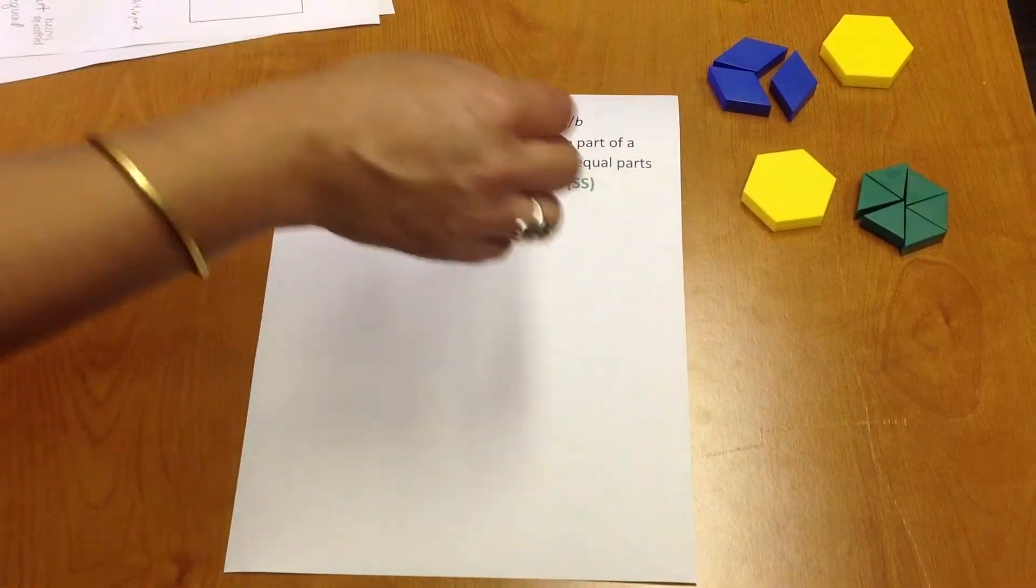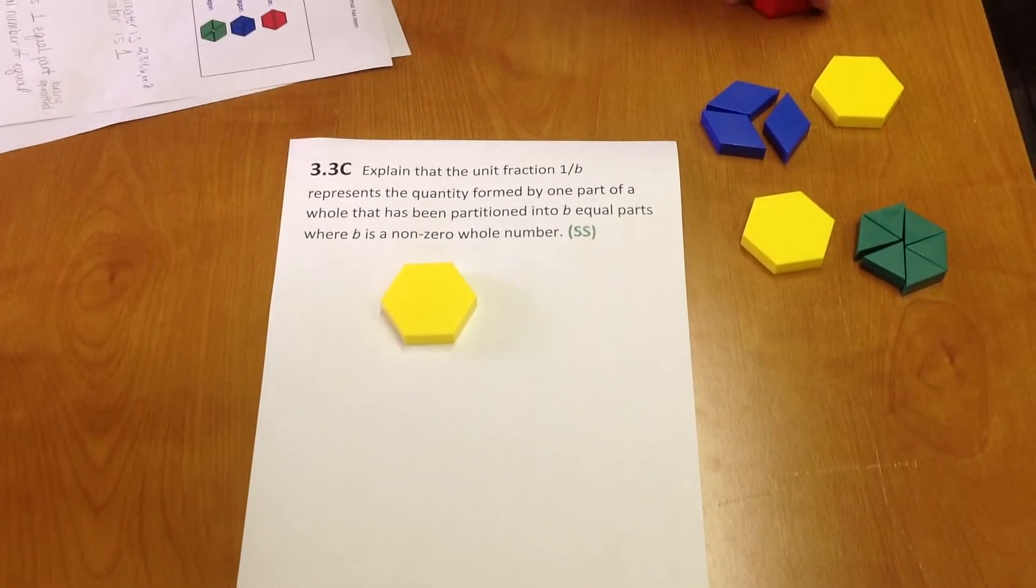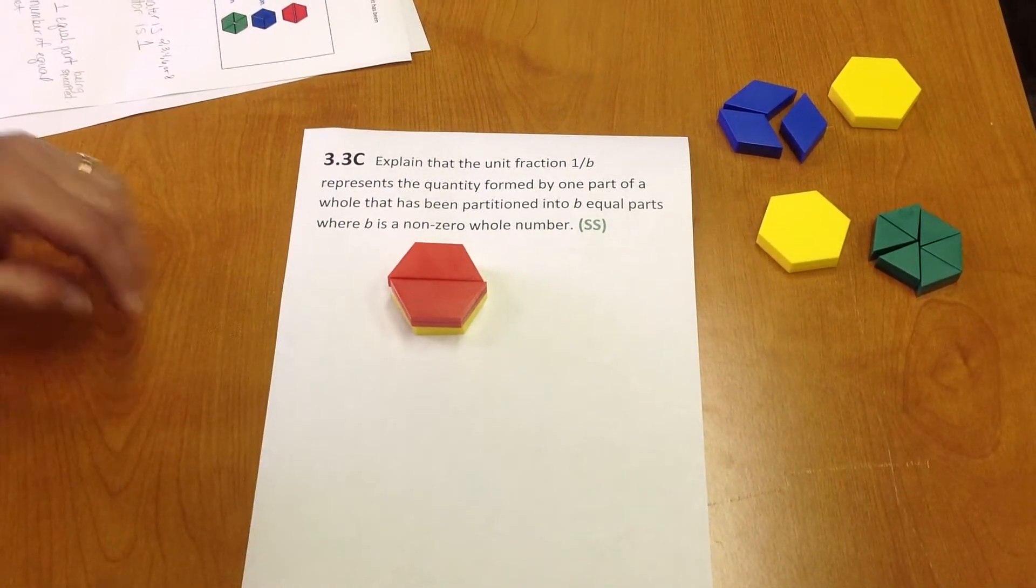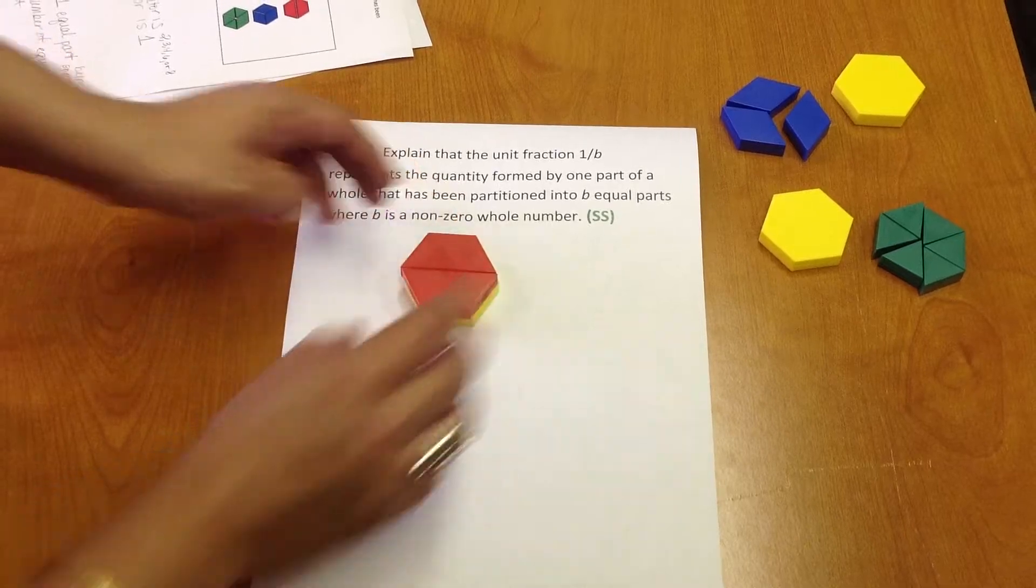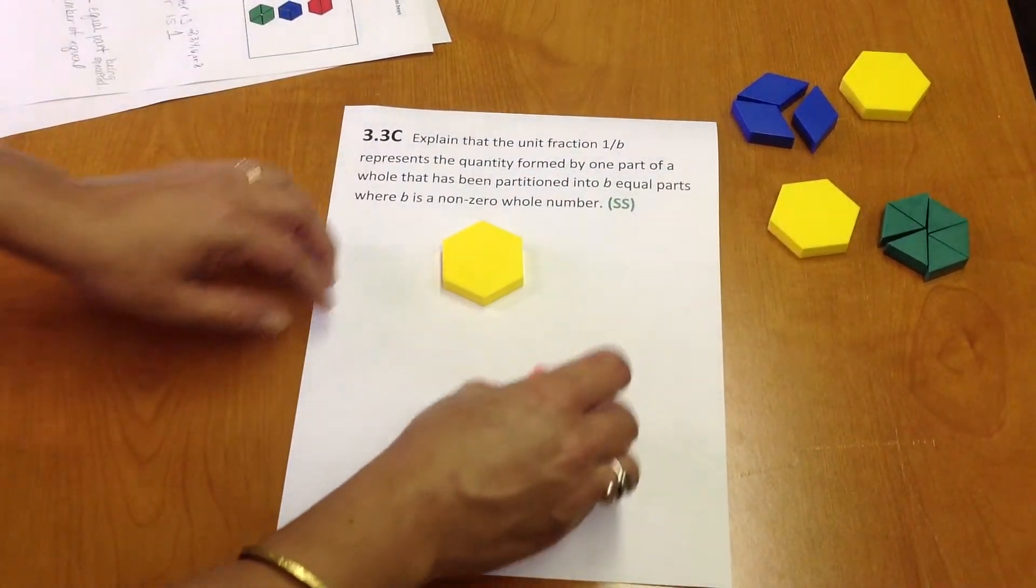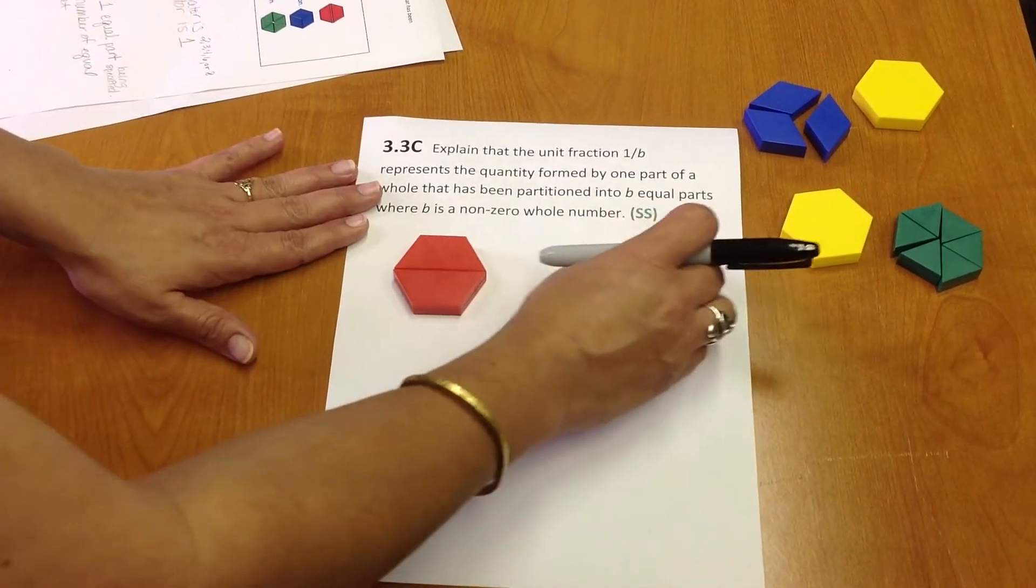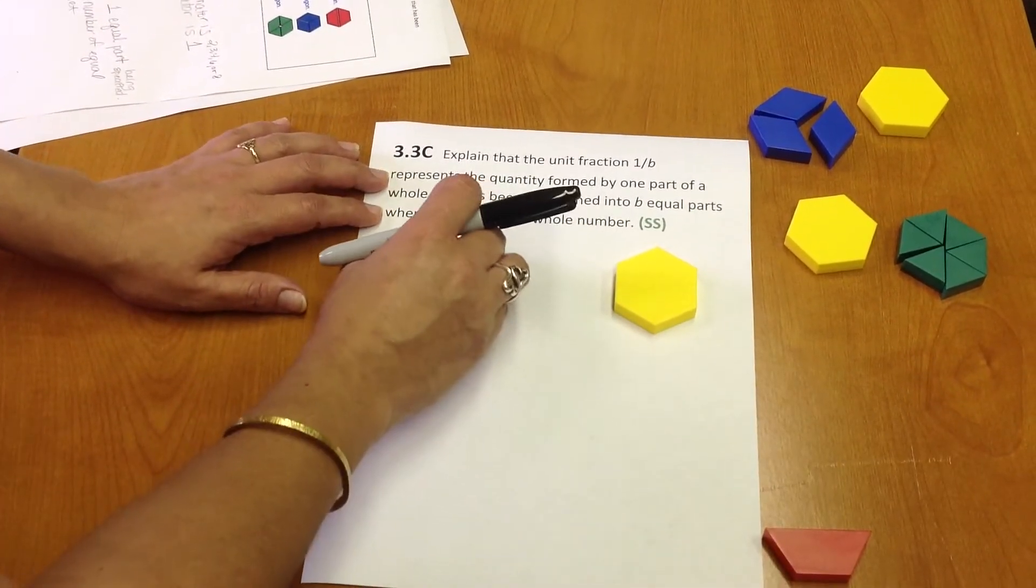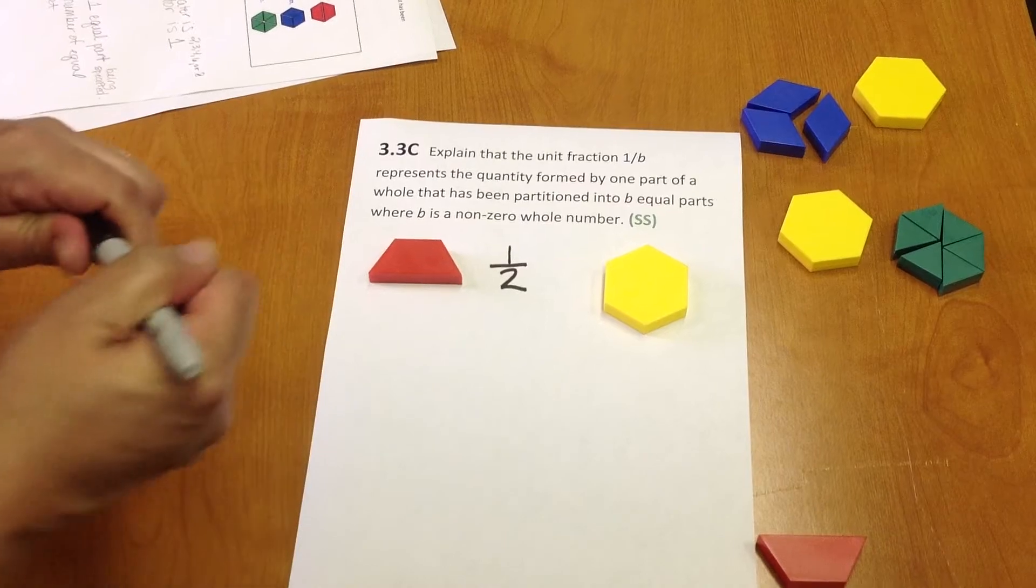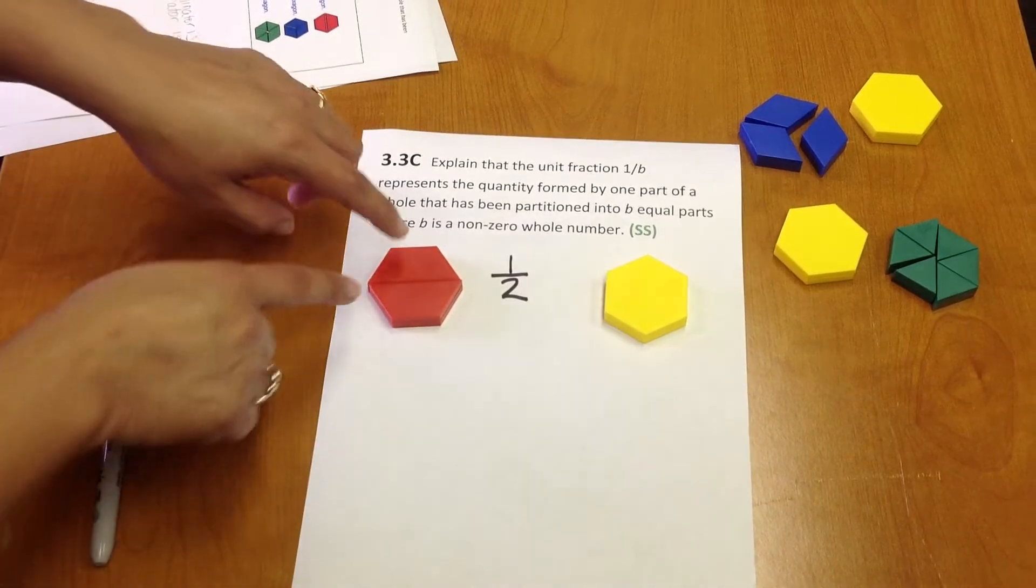I'm going to start with a hexagon. A hexagon can also be represented with two trapezoids. They make the same shape. So we have a one-whole hexagon, which can also be represented with two trapezoids. Therefore, one trapezoid is one-half, with our denominator indicating the number of equal parts, which is two. One, two.